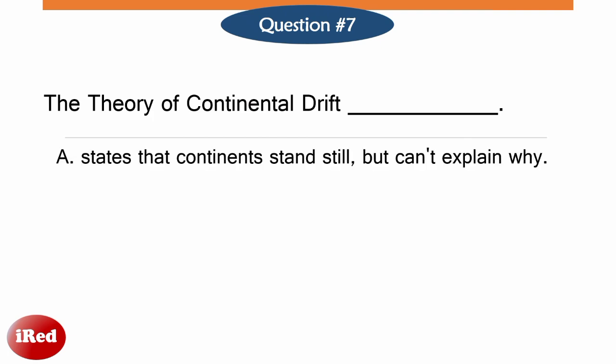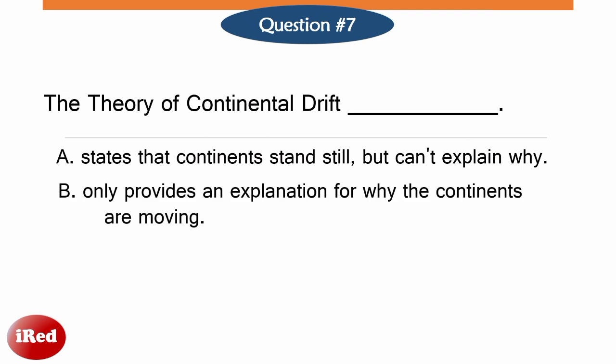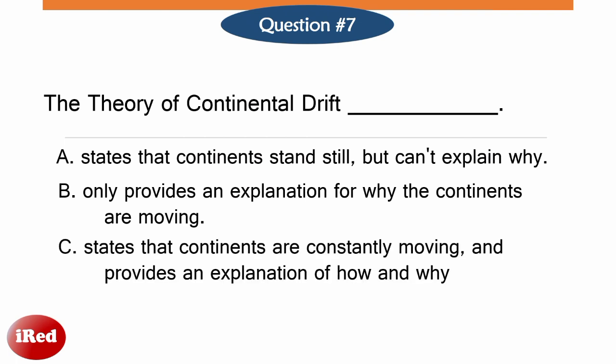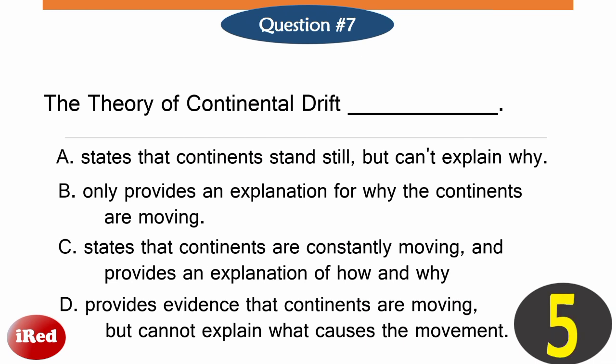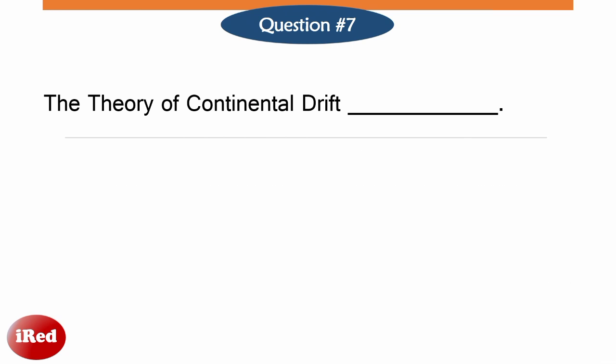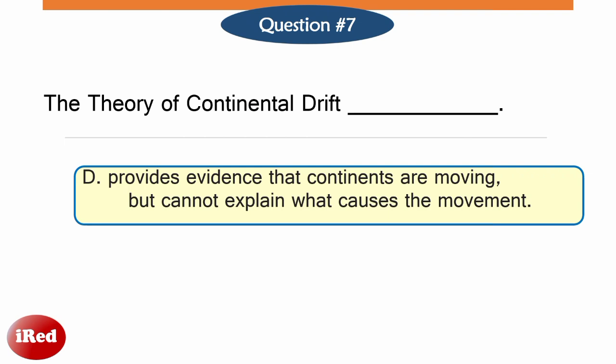Regarding the theory of Continental Drift: Letter A states that continents stand still but can't explain why. Letter B only provides an explanation for why the continents are moving. Letter C states that continents are constantly moving and provides an explanation of how and why. Letter D provides evidence that continents are moving but can't explain what causes the movement. The correct answer is letter D. The theory of Continental Drift provides evidence that continents are moving but can't explain what causes the movement. This was the weakness of the theory — Alfred couldn't provide a plausible explanation about the causes of the movements of the continents, which led other scientists to dismiss his theory.